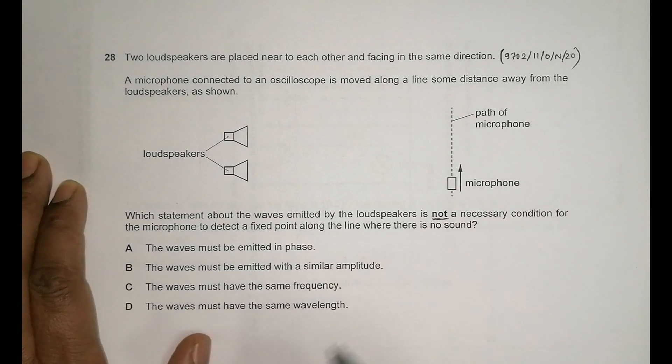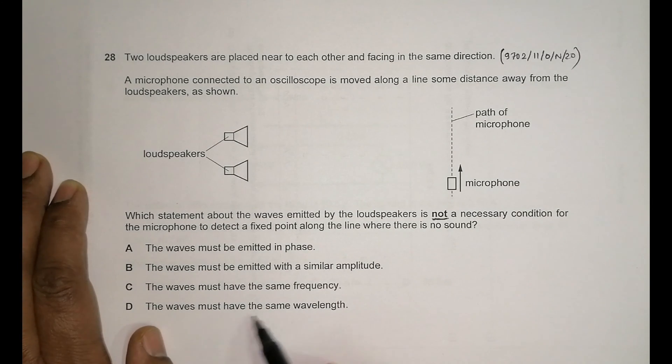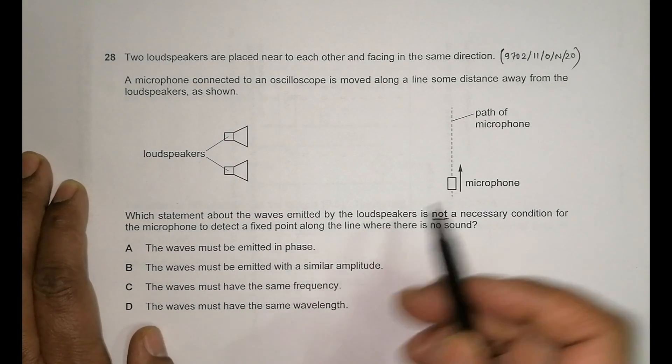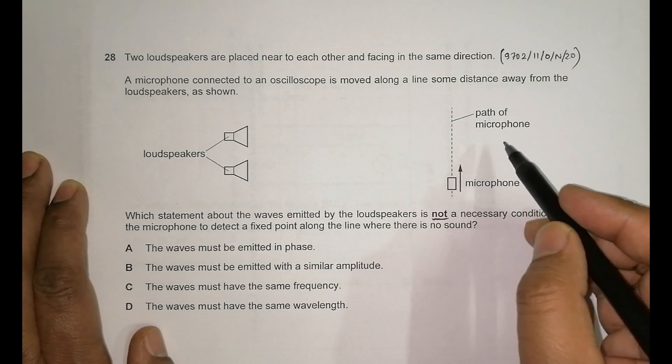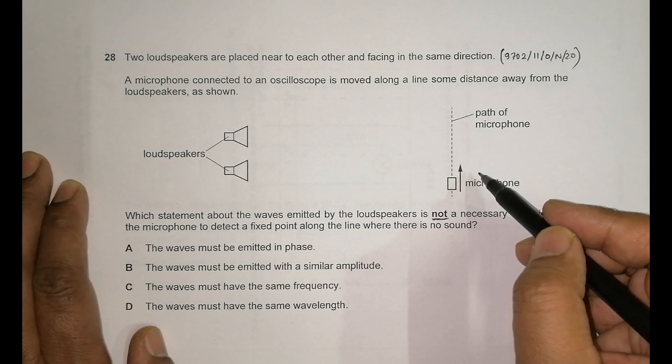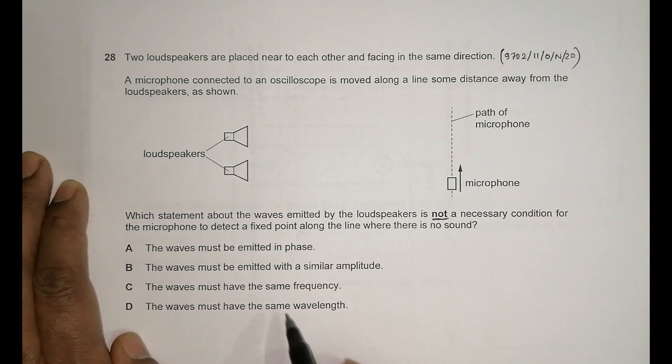Let's go from the reverse here. The waves must have the same wavelength. This question is concerned with interference of the waves from these loudspeakers, so they should definitely have the same wavelength if we have to have sustained interference here or if we have to have the position of loud sound and the position of less sound and so on. They should have same wavelength and they should have same frequency as well.